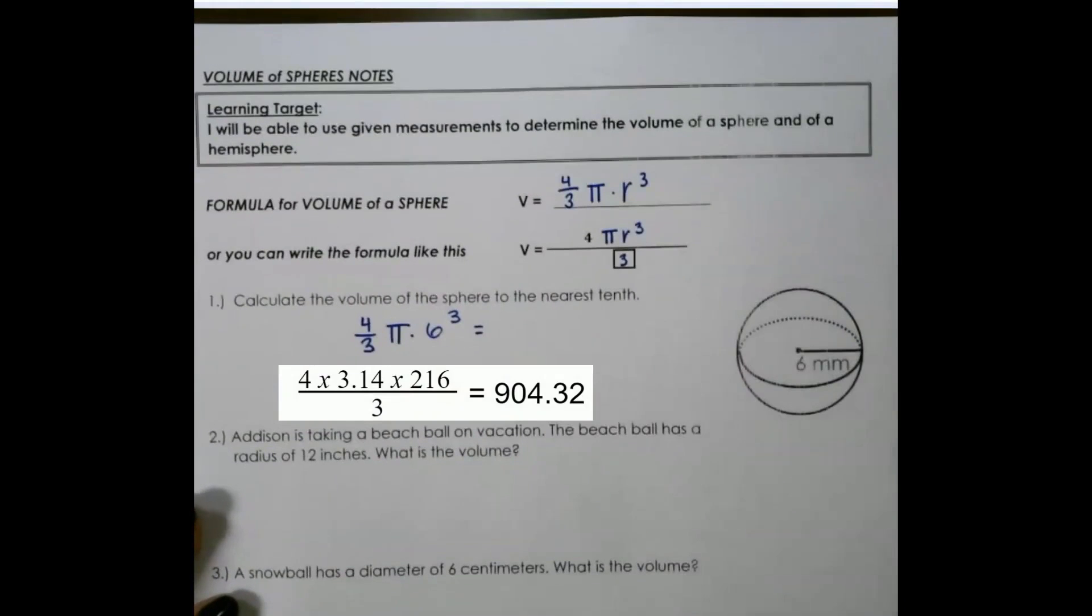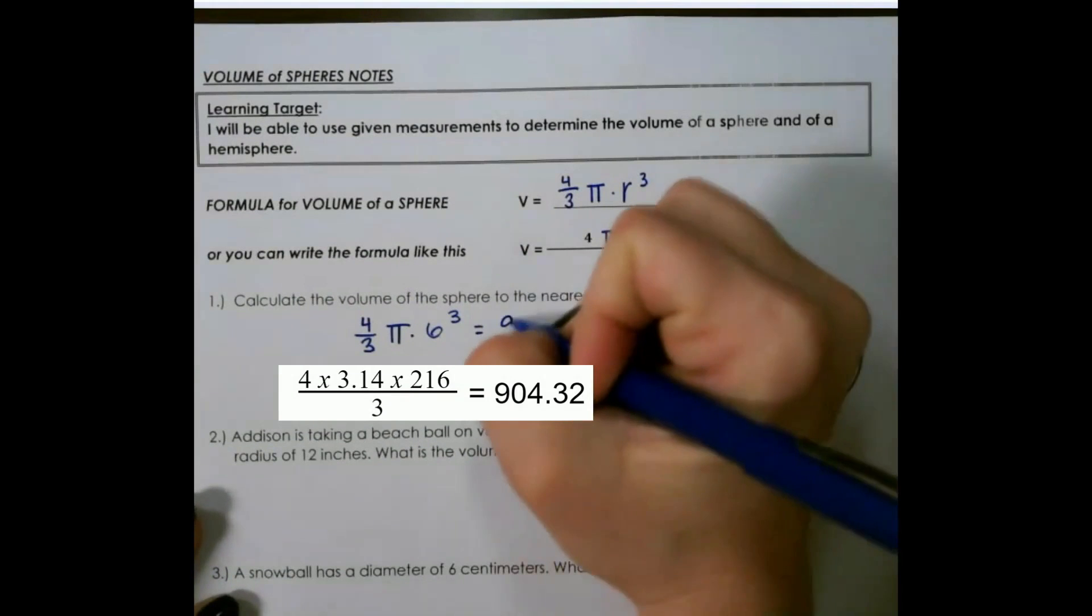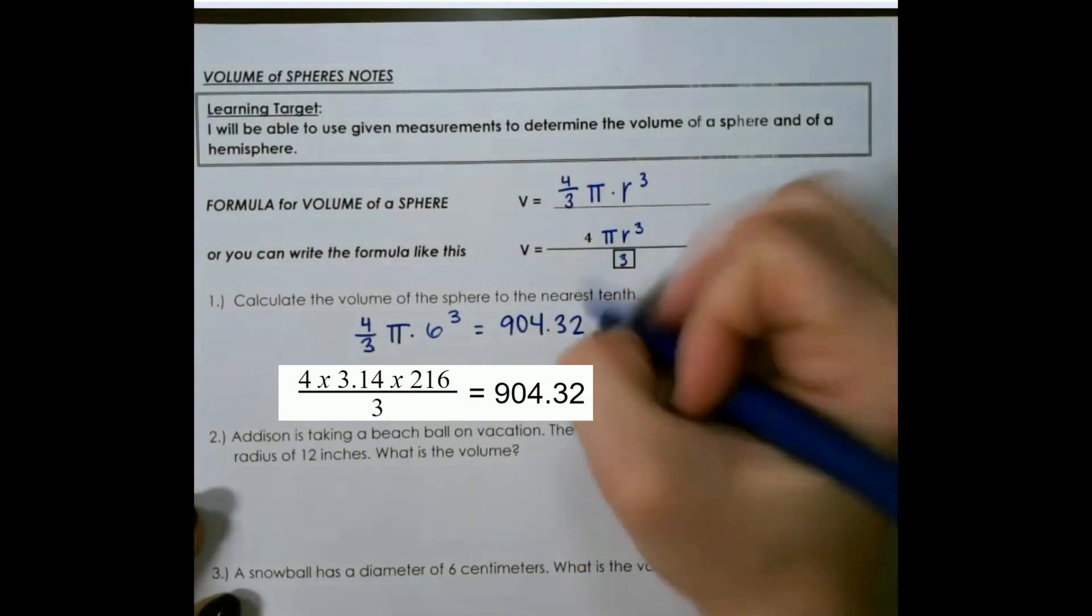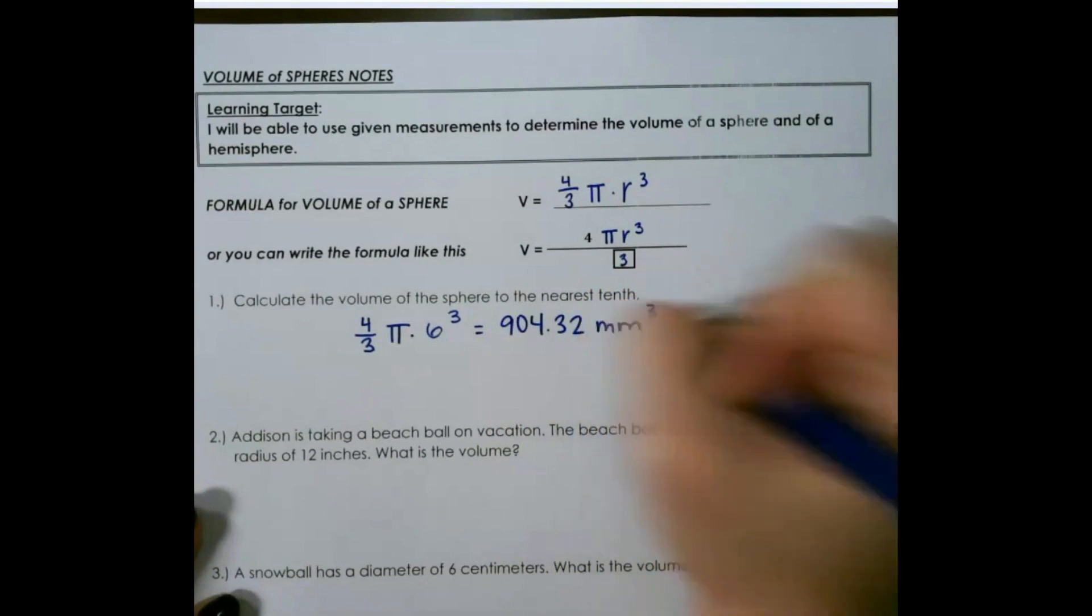When you plug all of that into your calculator, you would get 904.32, and it would be millimeters cubed.